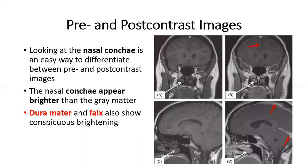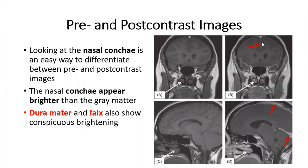Something important — we should know about the pre- and post-contrast images, how to differentiate between them. The contrast will be in the T1-weighted image, and it is quite simple. This is the coronal image. We should differentiate the nasal concha. In the pre-contrast image it will be dark, just like the gray matter. After contrast with gadolinium, it will be bright, brighter than the gray matter. Also, this is the dura mater and the falx cerebri, which will be bright after injecting the contrast material.